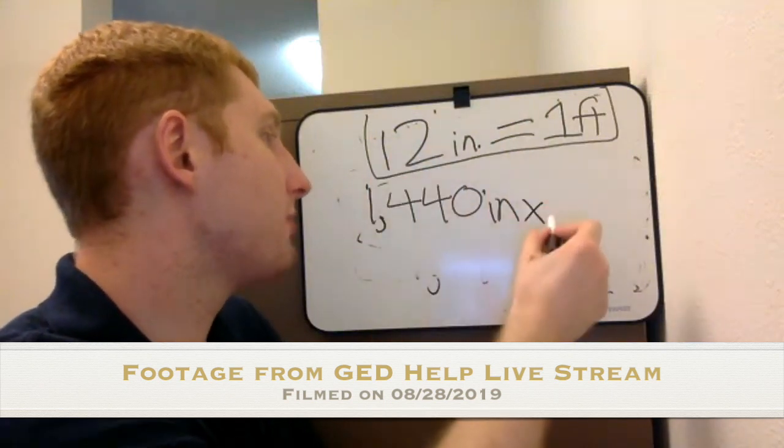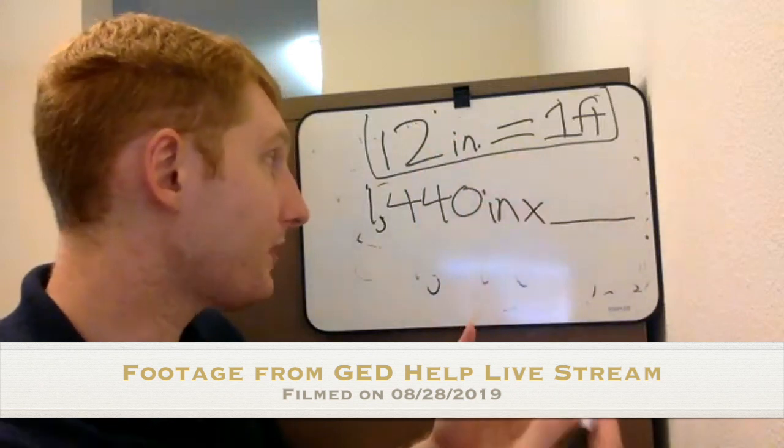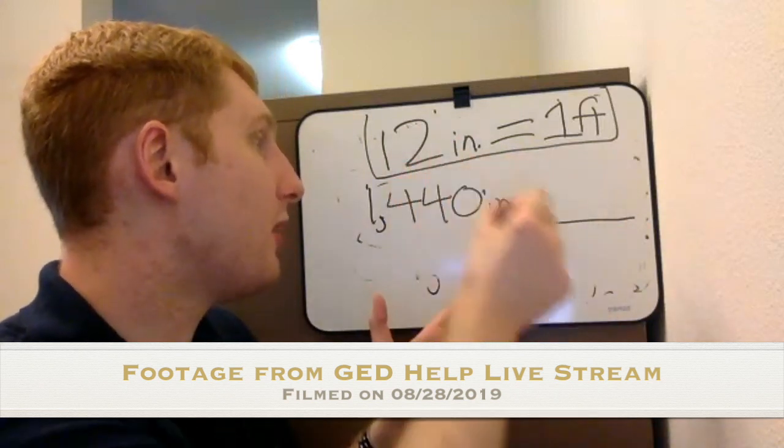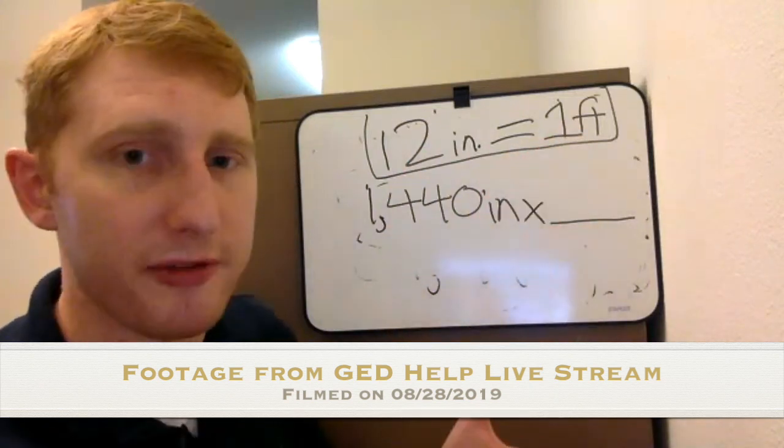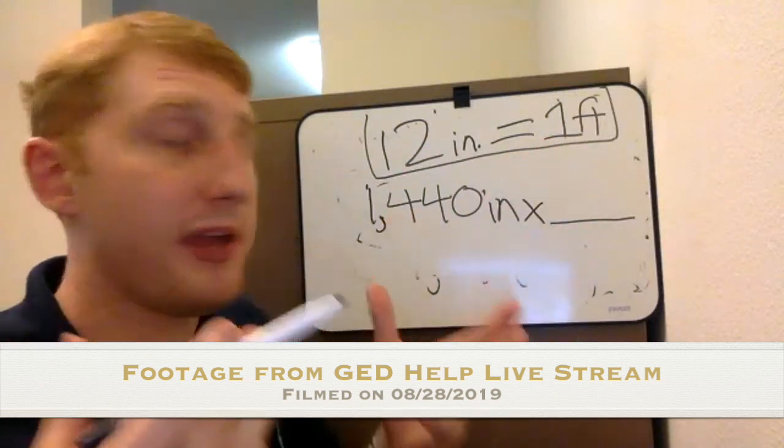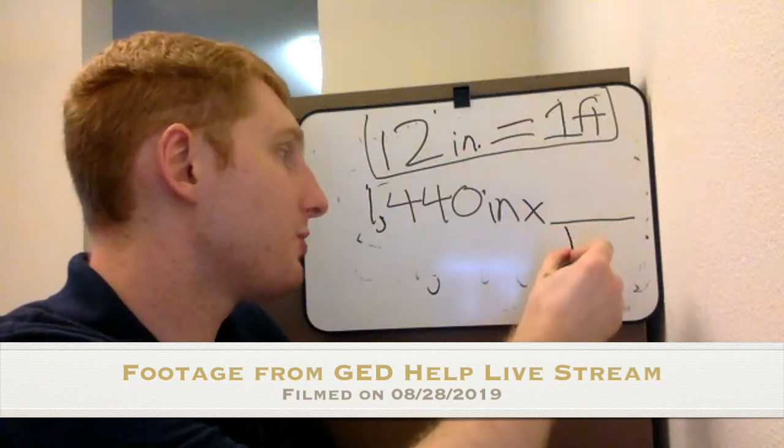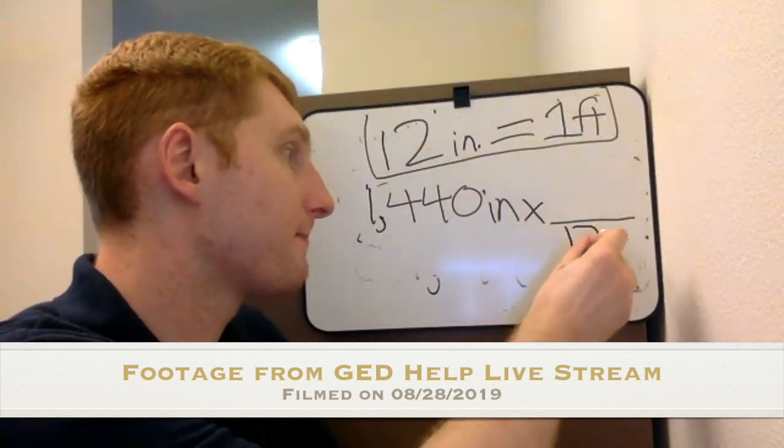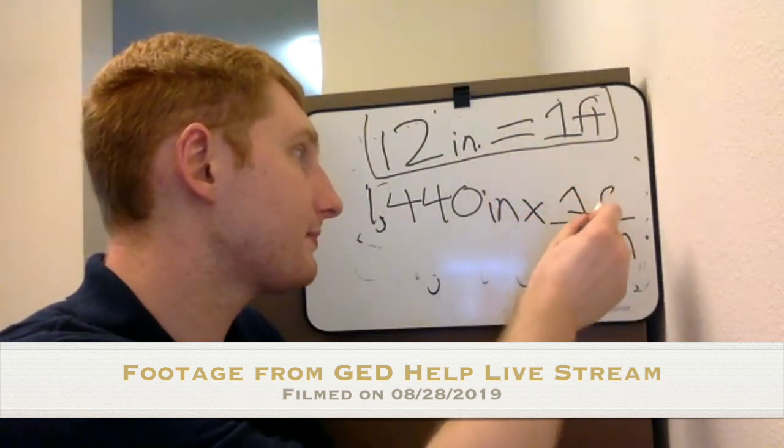And so now I want to multiply here. I'm going to take this conversion factor. I'm going to turn it into a fraction. Do I want to put 12 inches down in the bottom of the fraction or do I want to put feet down in the bottom? Well, the idea here is I want to make sure that I've got the inches down here. So I want to put 12 inches down here. And so then the one foot just goes up top here.